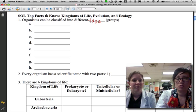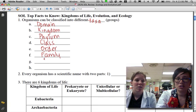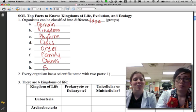For number one, it says organisms can be classified into different taxa, which basically just means groups. Now what we need to do is list those taxa based on their size. Starting with the biggest one, the biggest taxa is domain, and then working our way down: kingdom, phylum, class, order, family, genus, and species.